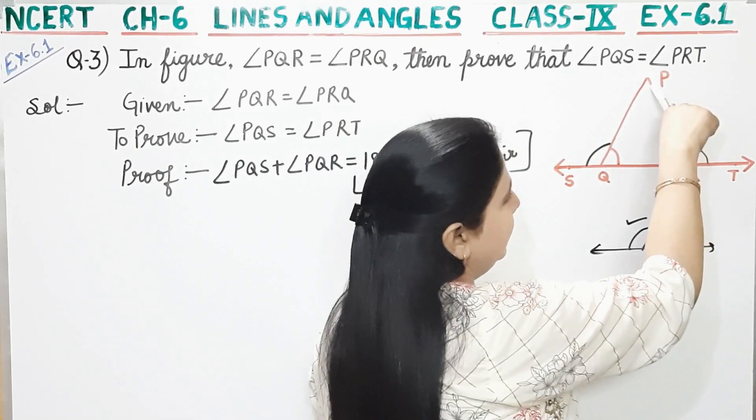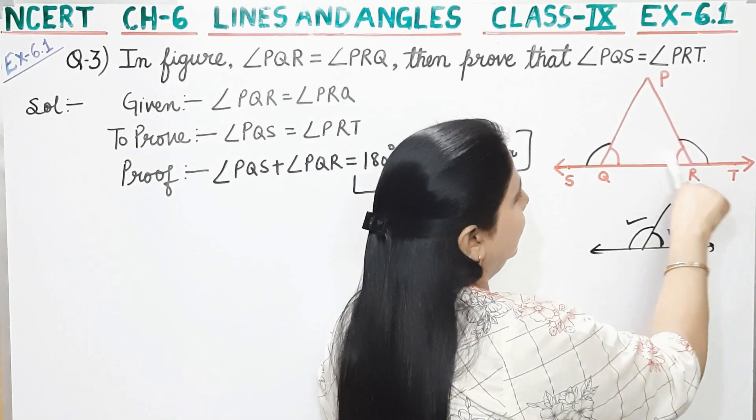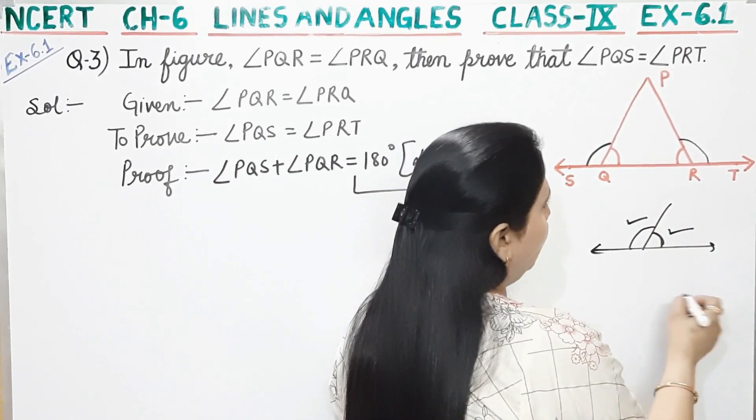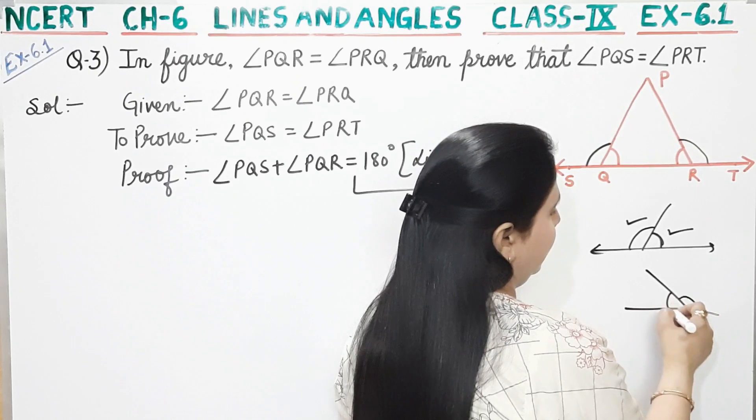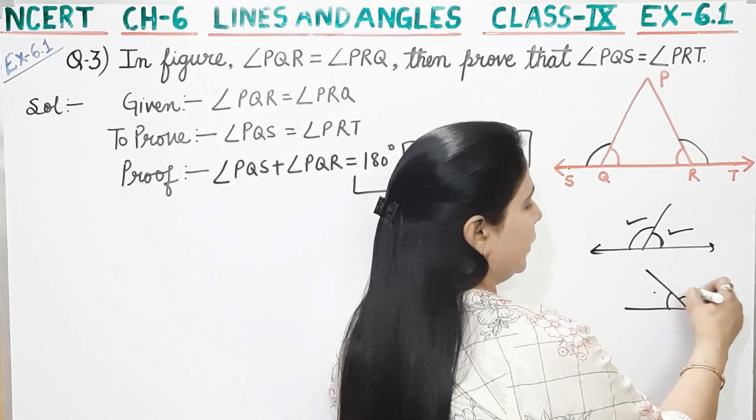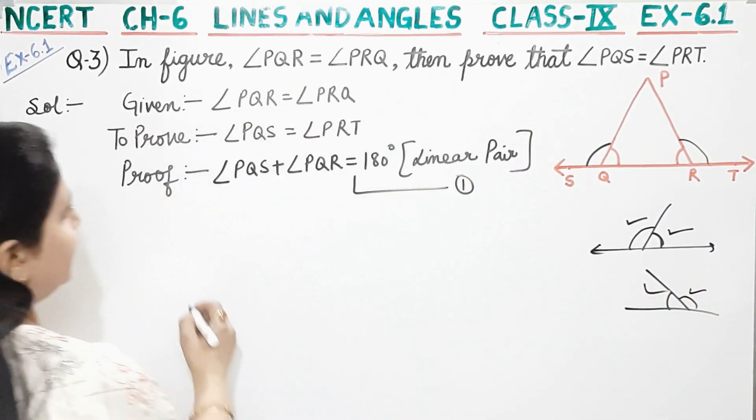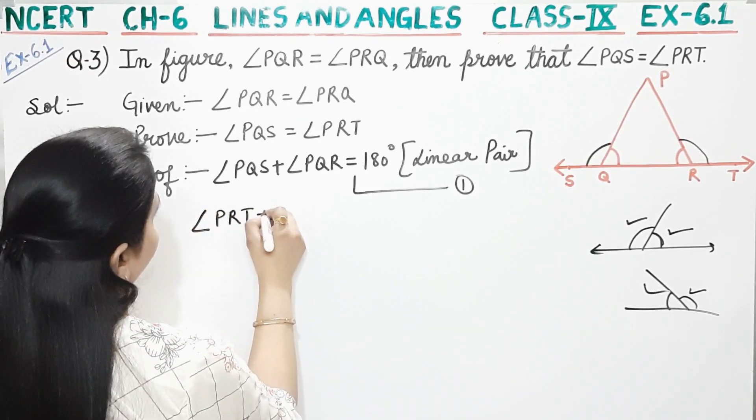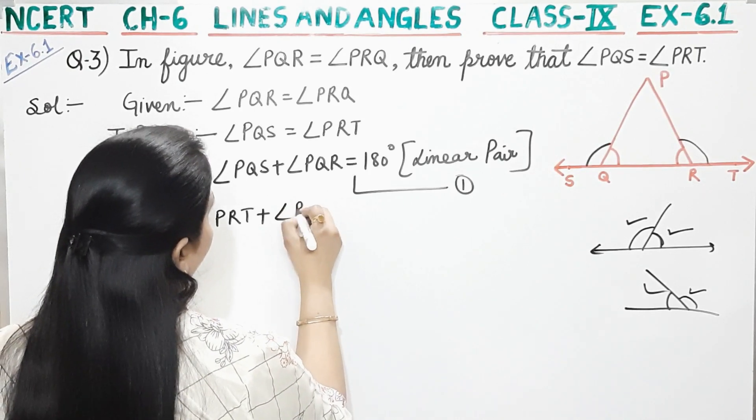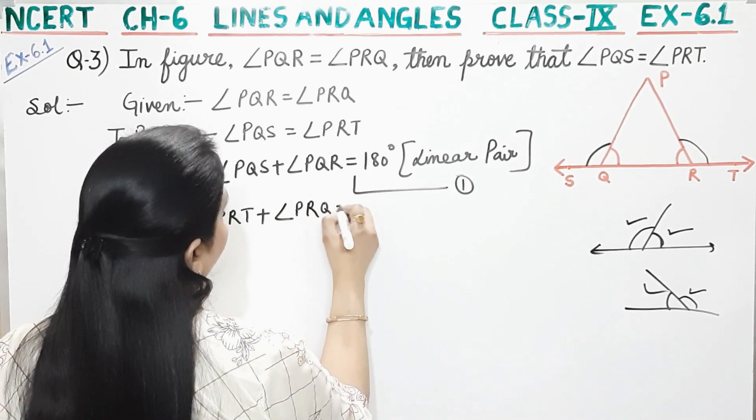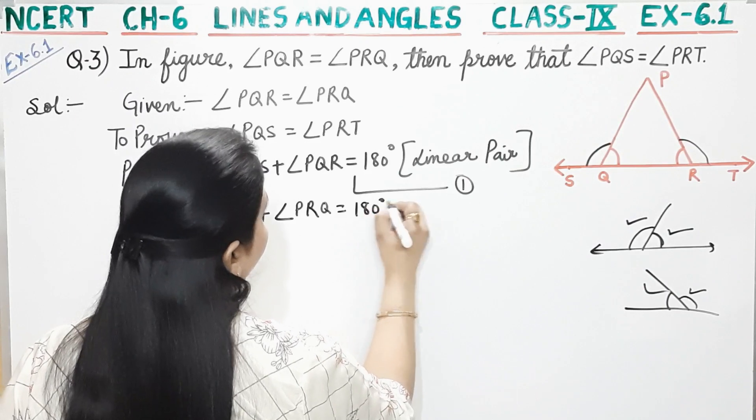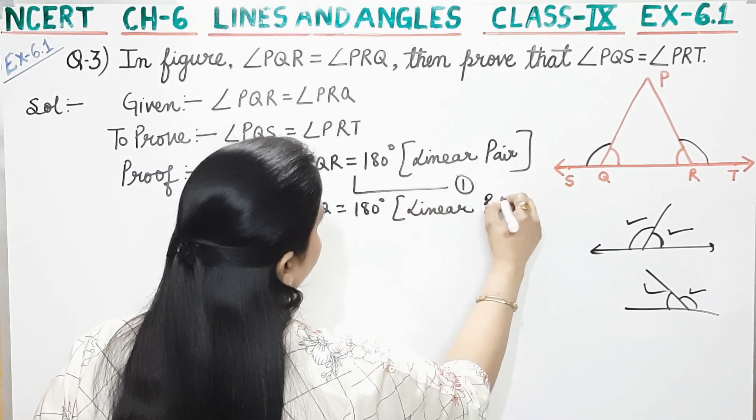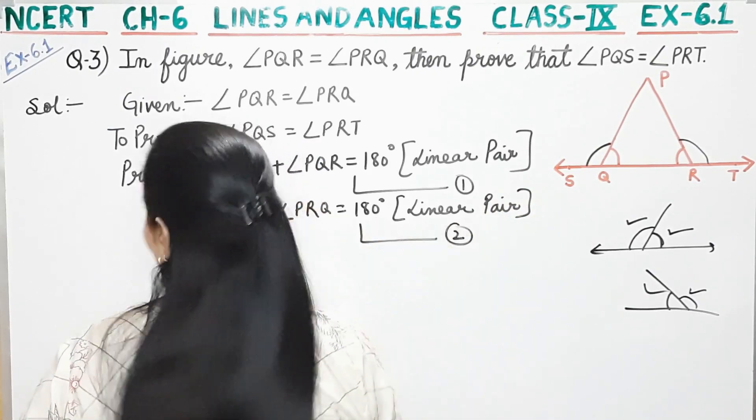So, here we have to use angle PRT and PQS. These are both linear pairs. This angle will be 180, linear pair. So, we can write angle PRT plus angle PRQ is equal to 180 degrees. Reason: same linear pair. This is our equation 2.